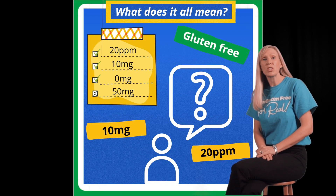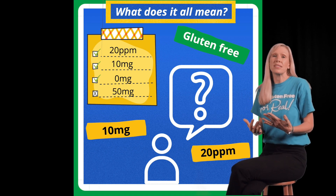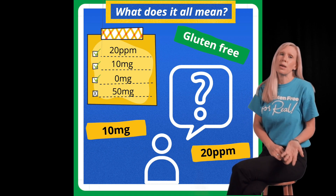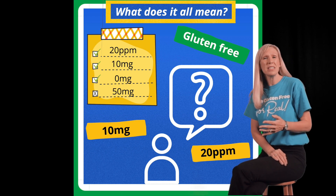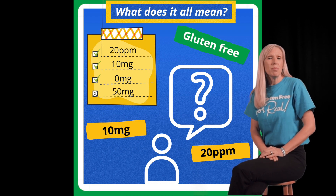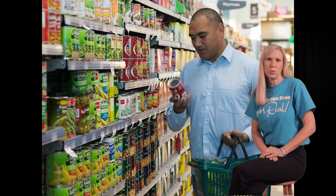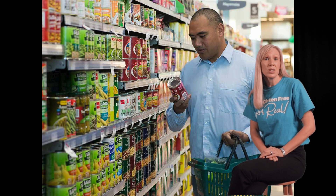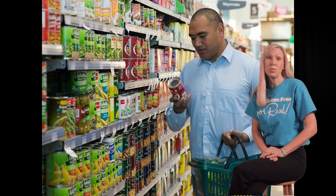Now that we have discussed what the 20 parts per million gluten threshold is for foods labeled gluten-free, how does this translate into milligrams of gluten in the amount of food products consumed, and what does this mean for people with celiac disease? Even the best gluten-free diet is rarely 100% gluten-free. On average, a person consuming a gluten-free diet may inadvertently consume various levels of gluten.